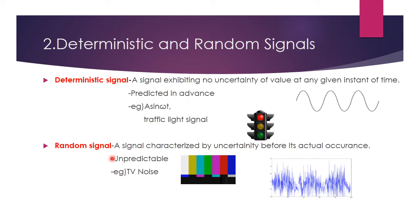A random signal is random in nature. The best example is noise. While watching TV, suddenly you will get a noisy screen. It is unpredictable — we don't know when the noise will occur. So this is the best example of a noise signal.